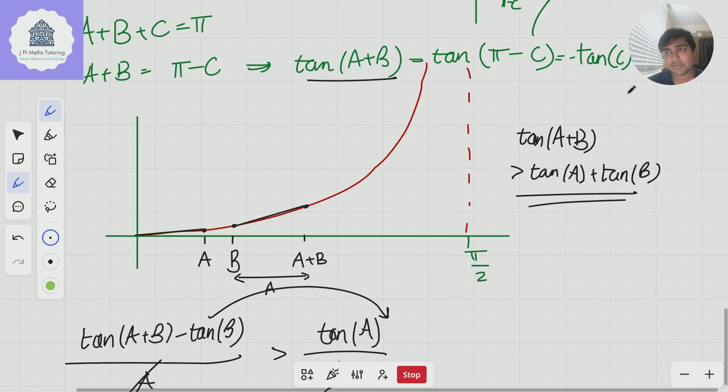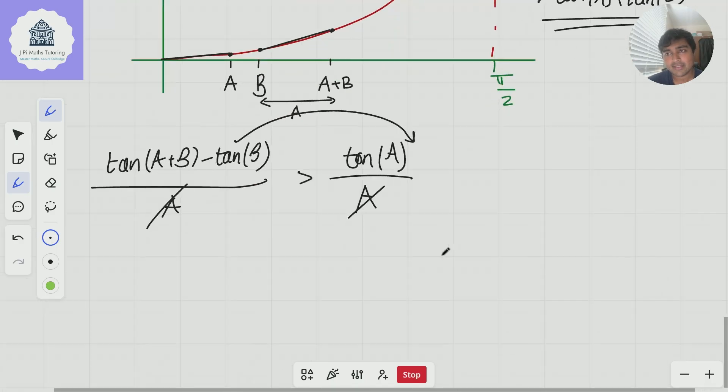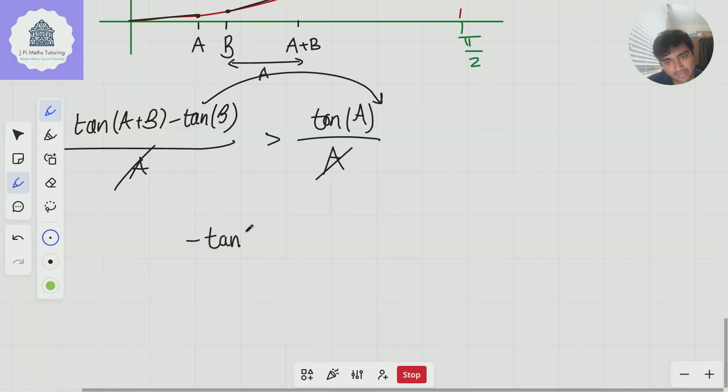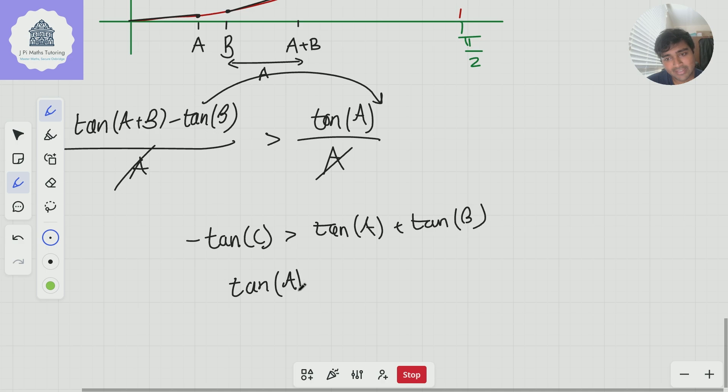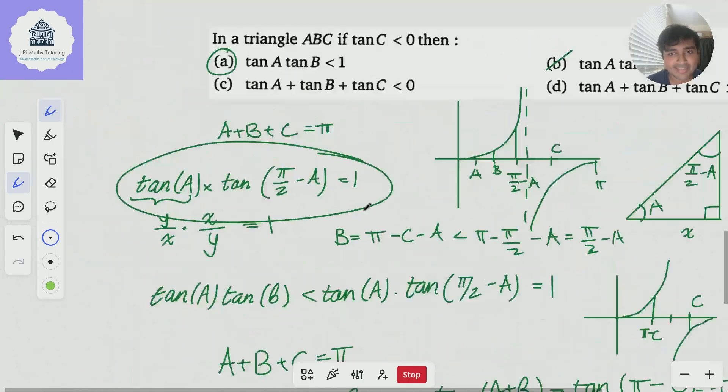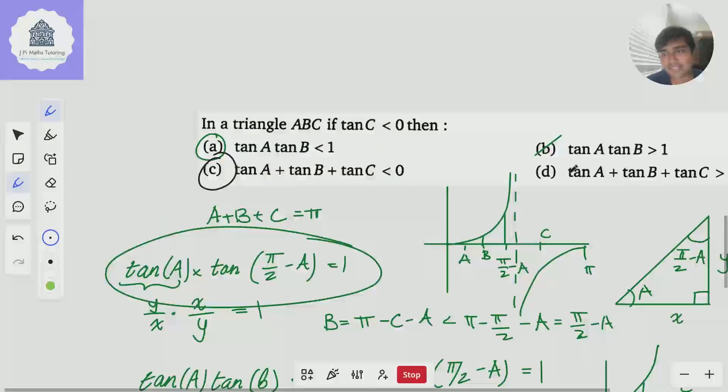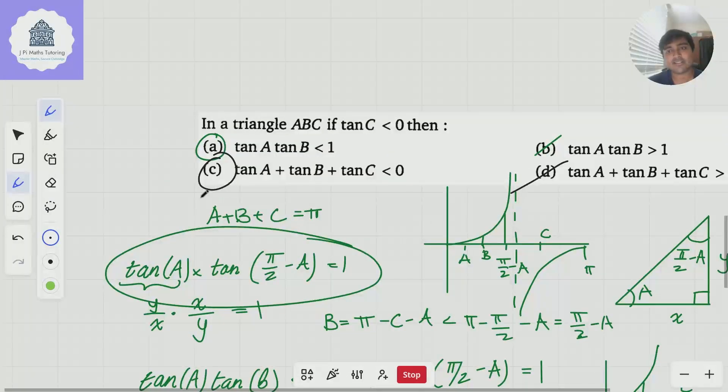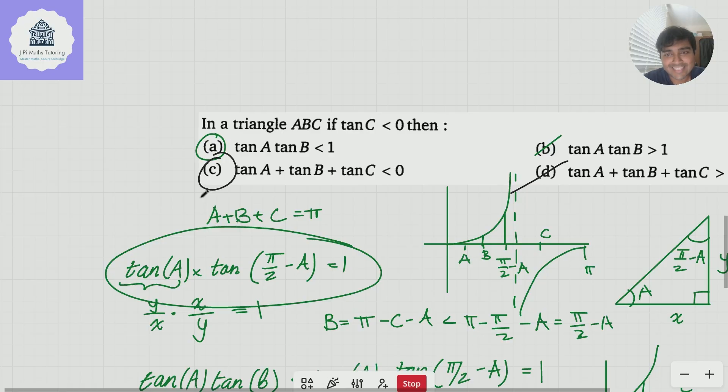So that's a pretty nice way of proving this using the graph and this convex property. And so now if we use that up here, so remember we earlier showed that tan(A+B) = -tan(C). If we now combine that with this, we get -tan(C) > tan A + tan B. And if I now add tan C on both sides, I get tan(A) + tan(B) + tan(C) < 0. And that proves that tan A + tan B + tan C must be negative. So C is the correct answer, not D. So the correct answers to this question are A and C.